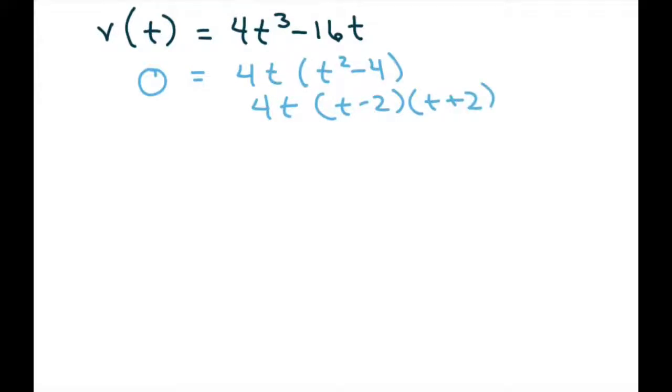So our t's are equal to 0, 2, and -2. We're going to discard the -2 because we want to go from 0 to 4. But this is going to tell us, because of the acceleration and the sign changes, that we have to divide up our intervals.